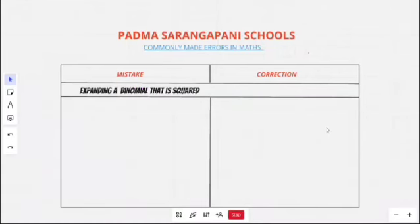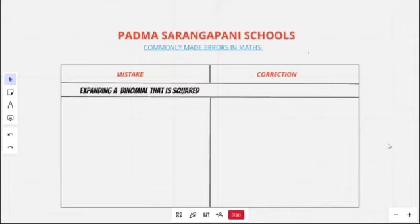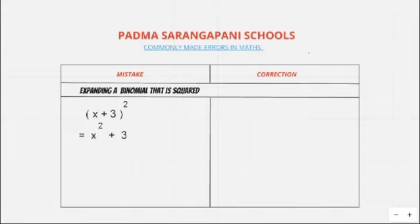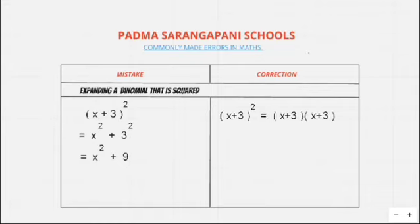Let us see the top mistake that everybody has done at least once. Expanding a binomial that is squared. For example, take the binomial (x + 3) the whole square. You will write it as x squared plus 3 squared, simplifying to x squared plus 9 — but that is totally incorrect. (x + 3) the whole square equals (x + 3) into (x + 3). Completely distributing, it equals x squared plus 3x plus 3x plus 9, which simplifies to x squared plus 6x plus 9.